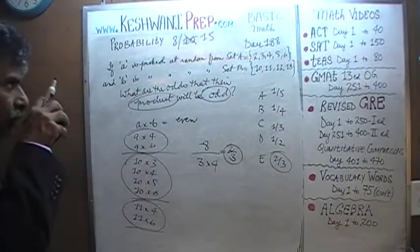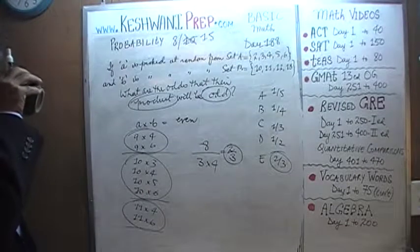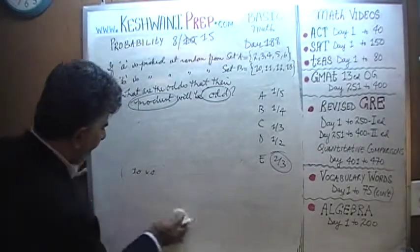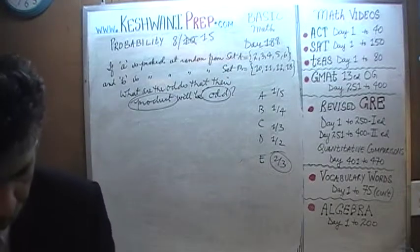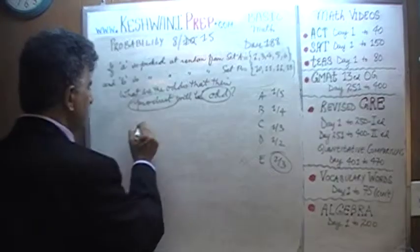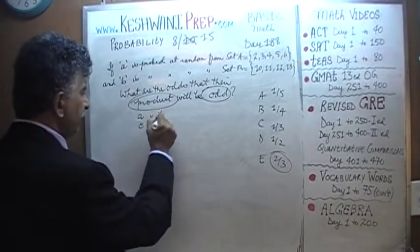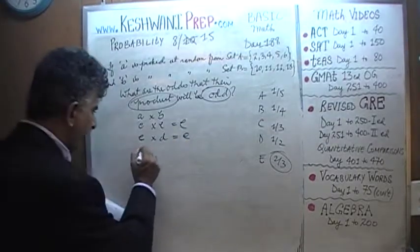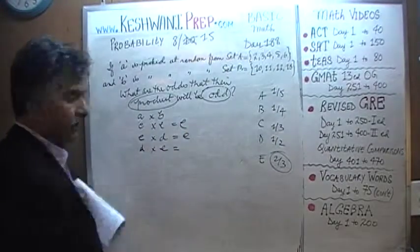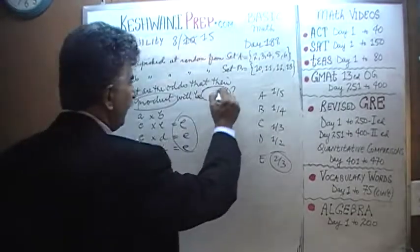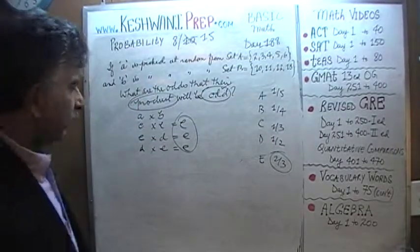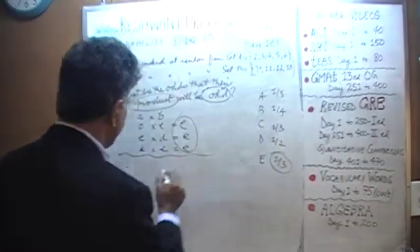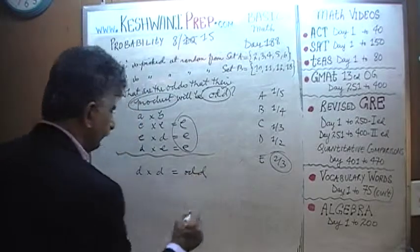We want the product to be odd. What we have to understand is that if a happens to be even, even times even is going to be even; even times odd is also going to be even; odd times even is also going to be even. The only way the product can be an odd number is if both numbers are odd.